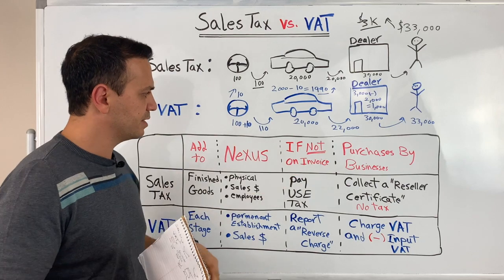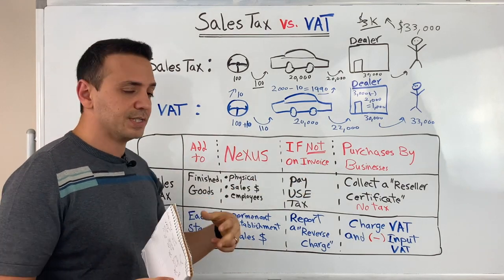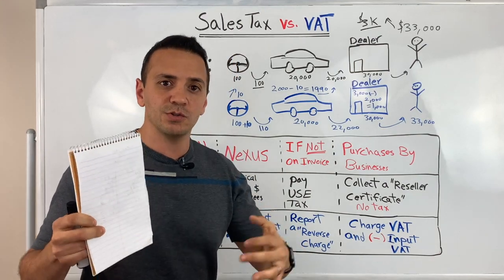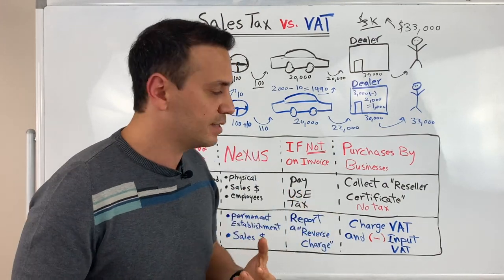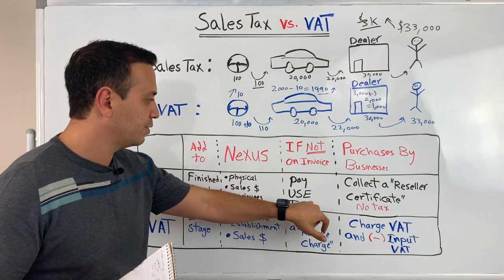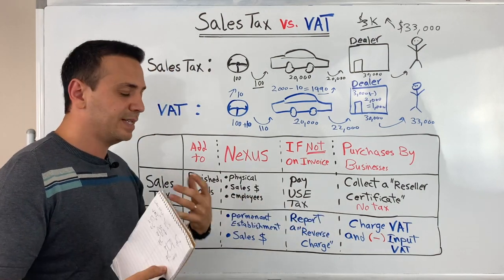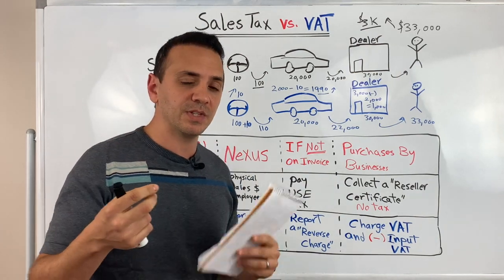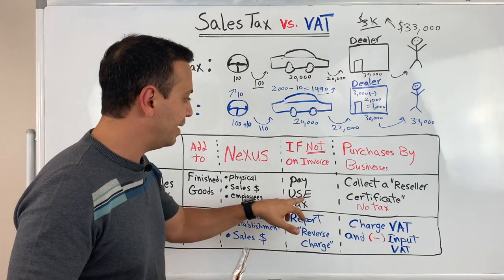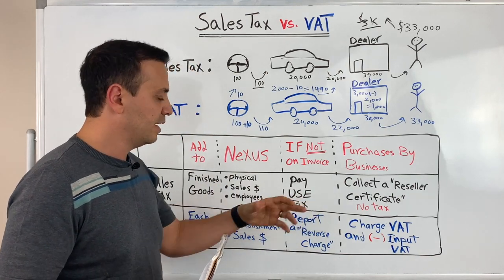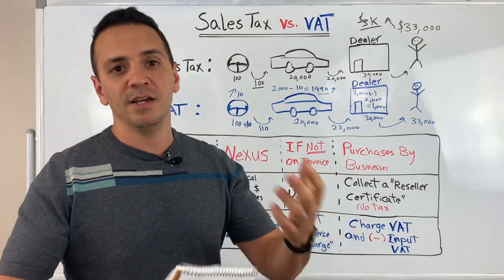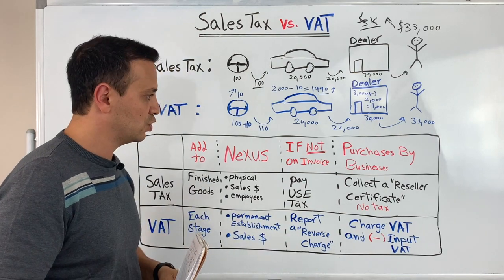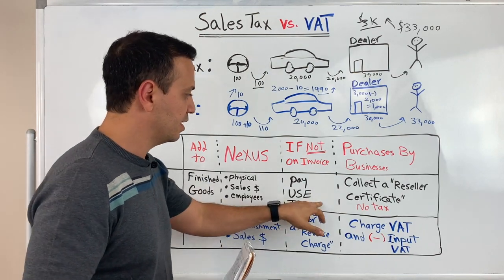Another difference is what happens if tax is not on the invoice. If there is no sales tax on the invoice, as a business consuming these services, you have to be mindful of paying a use tax. In the U.S., if you get an invoice from a vendor and it doesn't have sales tax on it, you have to pay the use tax. The use tax is the flip side of the coin of sales tax — if it's not added to the invoice, you need to report and pay it as a business consumer.